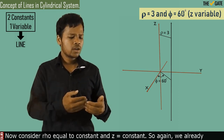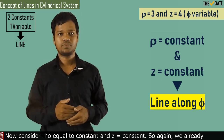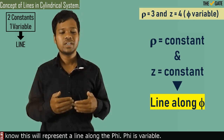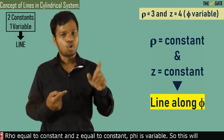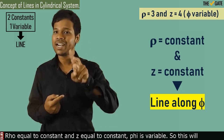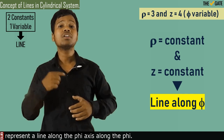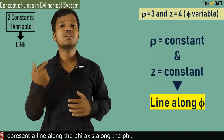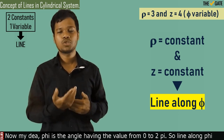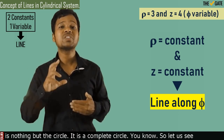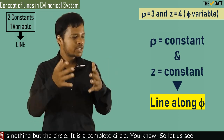Now consider rho equal to constant and z equal to constant, with phi variable. This represents a line along phi. Since phi is an angle ranging from 0 to 2π, a line along phi is nothing but a complete circle.